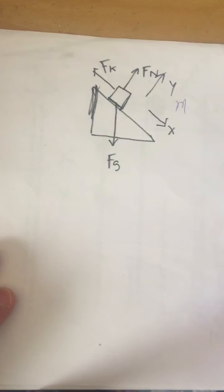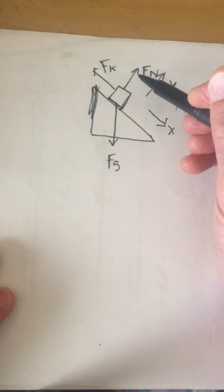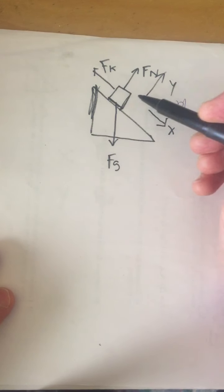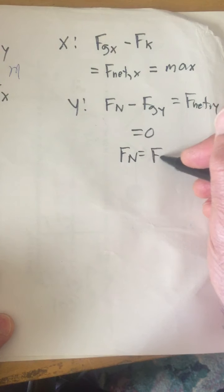That has to be equal to zero because the block is not accelerating into the ramp or out of the ramp. Its acceleration in the y direction has to be zero. What that means therefore is that Fn equals Fgy.